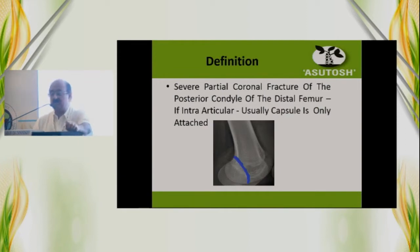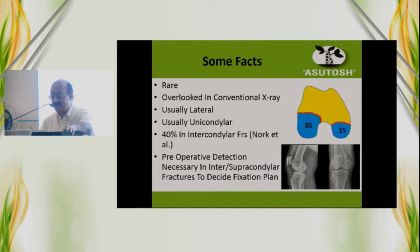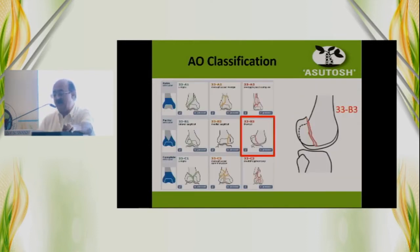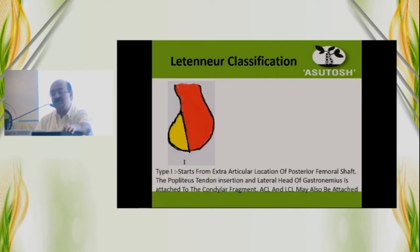This is a severe coronal fracture of the posterior condyle, and if it is very low, there is only a capsular attachment to it. The lateral side Hoffa's is more common than the medial side and they are usually unilateral. The AO classification calls it 33.2b3, but it doesn't help in any prognostic status.